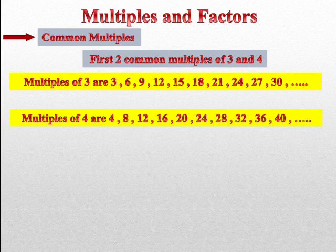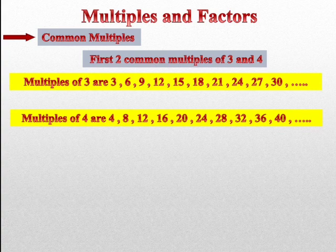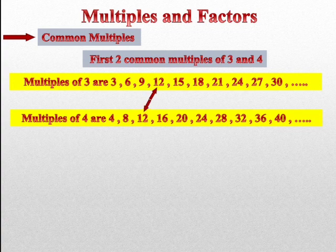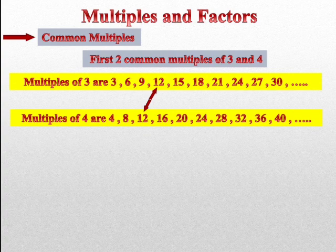Yani ki shuruat se hume jayenge 3×1=3 aur 4×1=4 se. To us mein se jo same number aata hai, common number aata hai, wo dono ka milake common multiple hoga. Yaha pe hume dekh sakte hai 3 ke table mein 12, aur 4 ke table mein bhi 12 hai. Yani ki 3×4=12 aur 4×3=12.